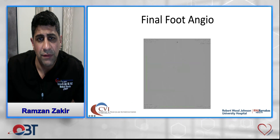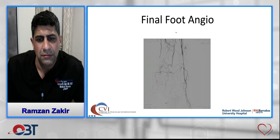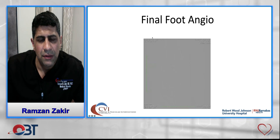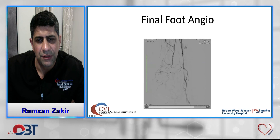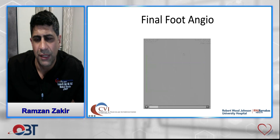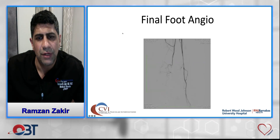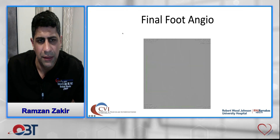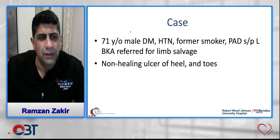Here's the final foot angiogram. For the traditional retrograde crossing approach, I typically use an 0.018 support catheter with standard wires such as a Command, V18, or glide wire.